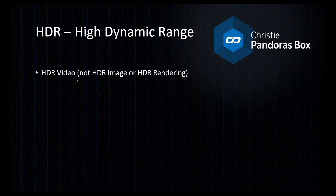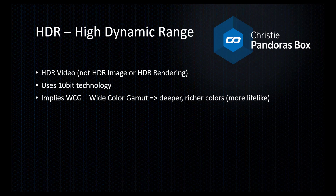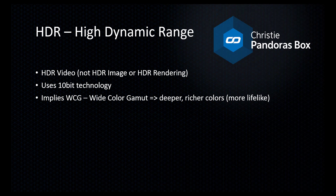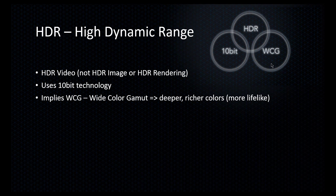Often the terms HDR and 10-bit are used interchangeably, but they mean two very different technologies. The HDR we are talking about uses 10-bit technology and is also based on wide color gamut technology. The standard color gamut describes how colors are defined on CRT monitors, while the wide color gamut (WCG) defines the primary colors to be more like the human eye actually sees them — so any monitor or projector capable of showing WCG shows deeper, richer, more lifelike colors. These three terms are linked: you have 10-bit technology, you have wide color gamut, and HDR is based on both.